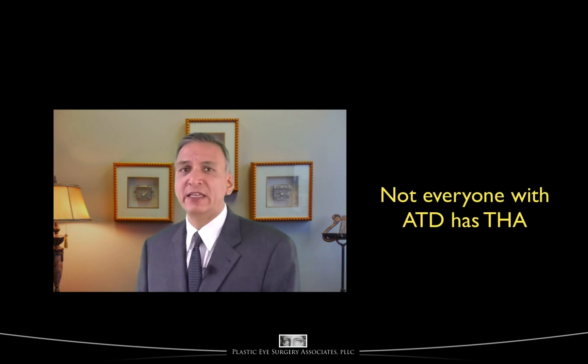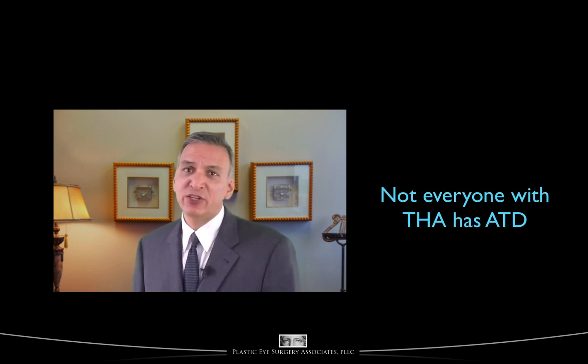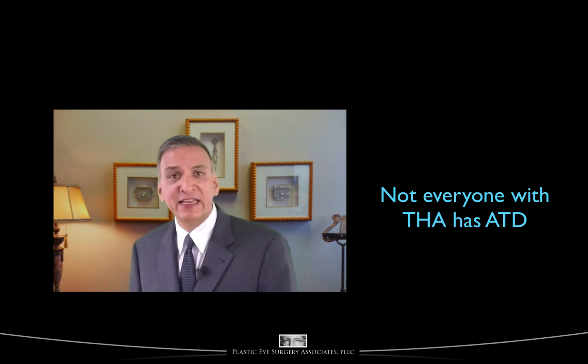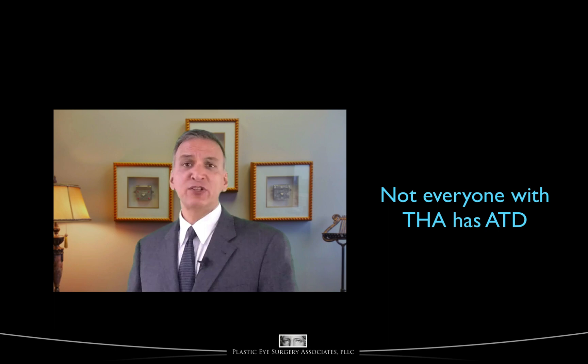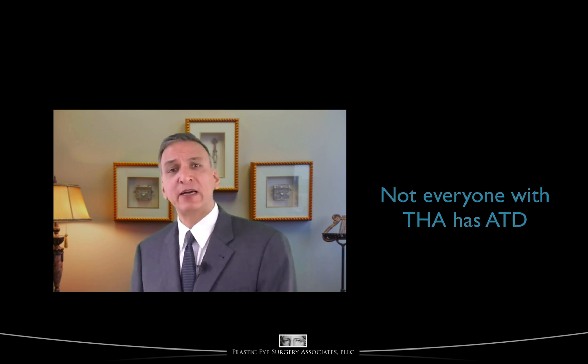So not everyone with ATD has THA. Take for example the person who has equal amounts of inhibitory and stimulatory antibodies binding to the TSH receptor. And not everyone with THA, or thyroid hormone abnormality, has ATD, or autoimmune antibodies. Take for example the person whose thyroid has been surgically removed for thyroid cancer — their thyroid hormones are low, but they don't necessarily have autoimmune antibodies. Since measuring autoimmune antibody titers can be highly elusive, some people may have absolutely characteristic signs or symptoms of ATD without ever having blood test confirmation.